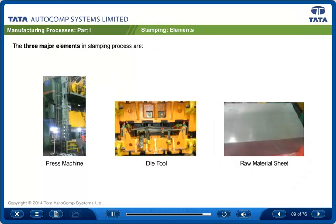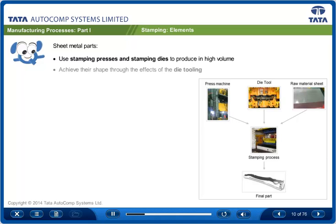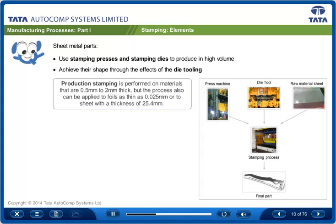Stamping presses and stamping dies are used to produce sheet metal parts in high volume. These parts achieve their shape through the effects of the die tooling. Production stamping is generally performed on materials that are 0.5 mm to 2 mm thick.